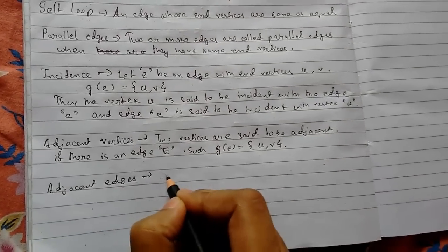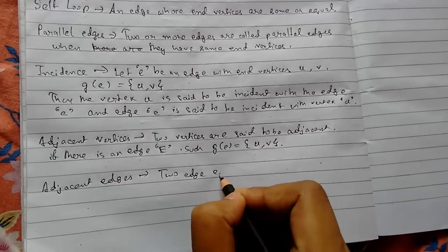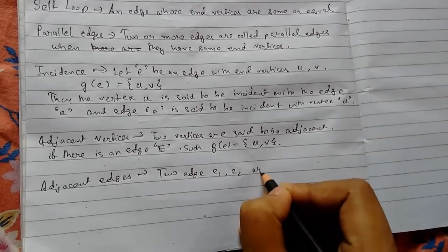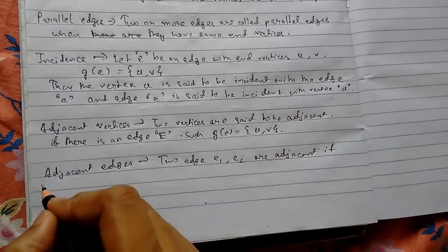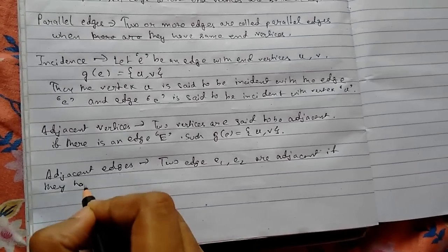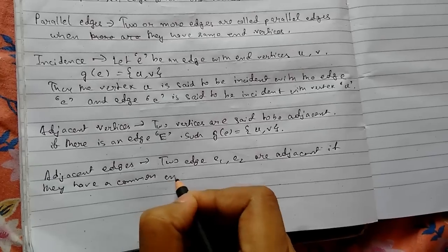Now adjacent edges. Two edges e1, e2 are adjacent if they have a common vertex.